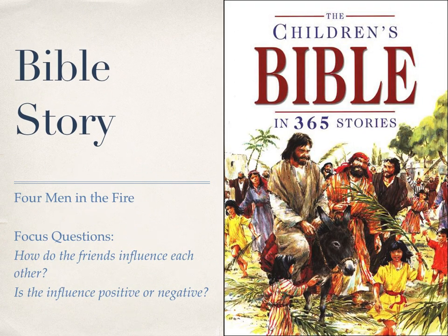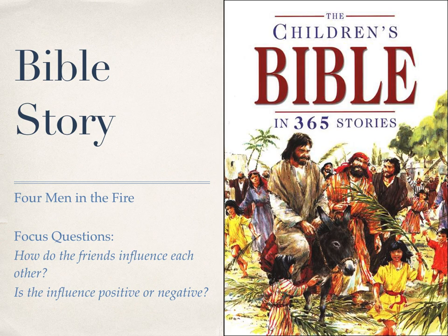Here is our second Bible story: 'Four Men in the Fire.' As you listen, think on these two focus questions: How do the friends influence each other? Is the influence positive or negative? Many of Nebuchadnezzar's officials at court were jealous of Daniel and his friends. They were delighted to find a way to get rid of them. They hurried to the king and told him about the three men who had dared to disobey his order. The king was furious and sent for Shadrach, Meshach, and Abednego.